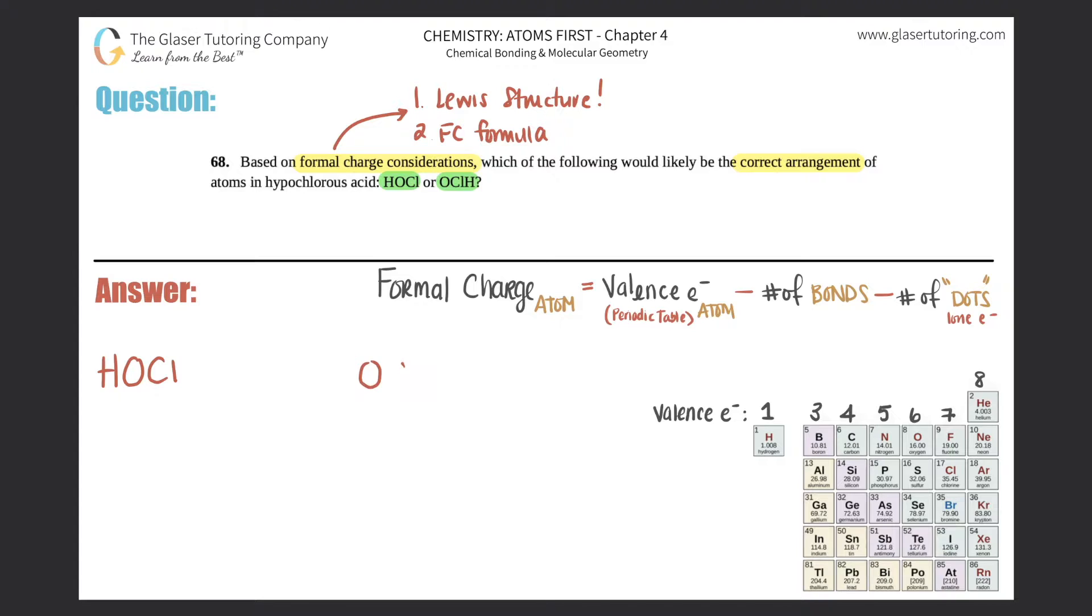Going by the foolproof Lewis structure method I prepared in previous questions, follow those steps if you want to figure out the Lewis structure. You can pause the video and try it yourself. I'm just going to give it to you because we've already done Lewis structures. For HOCl, it should be an H bound to an O bound to a Cl. This O should have two lone pairs and this one should have three lone pairs. For OClH, it's basically the same thing but reversed, so this O would be single bonded to chlorine and H.